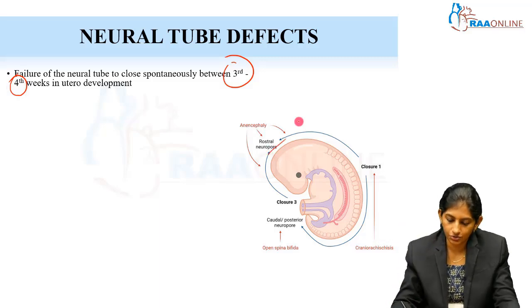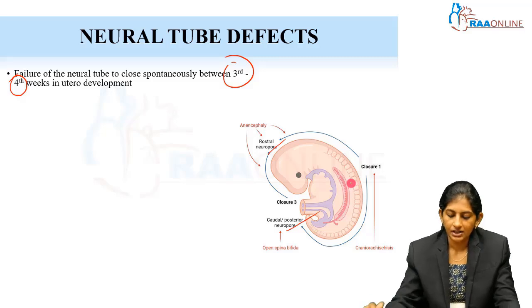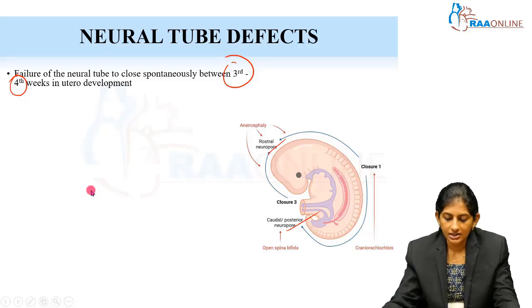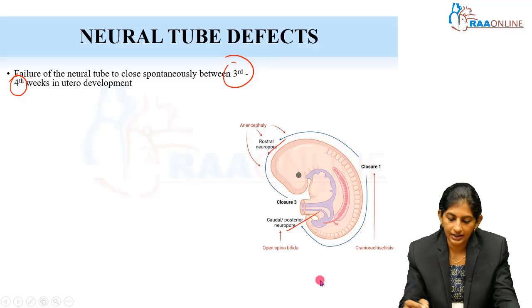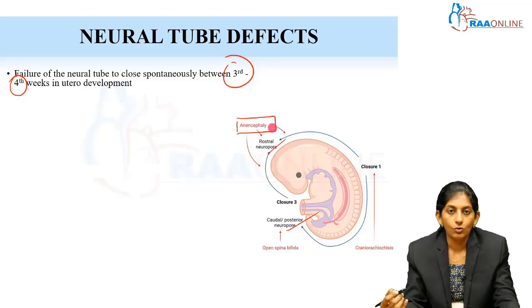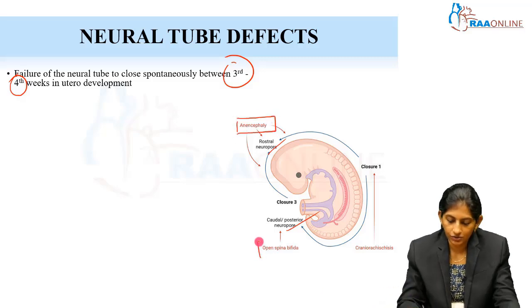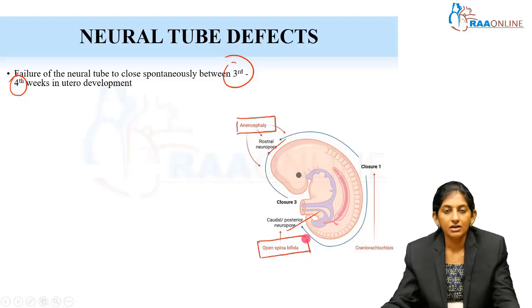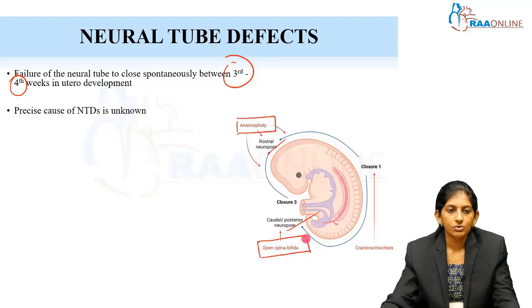The neural tube should close rostrally and it should close caudally. This can cause a variety of neural tube defects — anencephaly if it is open rostrally, or if it is open caudally then it results in open spina bifida.